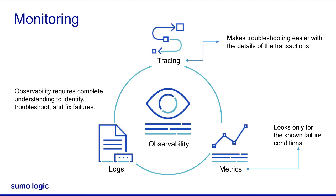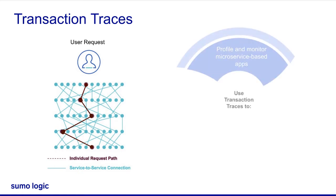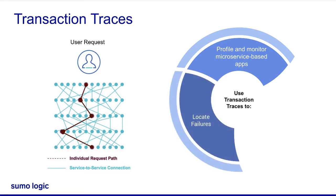Well, what are transaction traces? A transaction trace gives a detailed snapshot of a single transaction lifespan across your application environment. A trace follows the course of a user's request or system call from its source to its ultimate destination. You can use transaction tracing to profile and monitor microservice-based apps or architectures, locate failures, and improve performance.